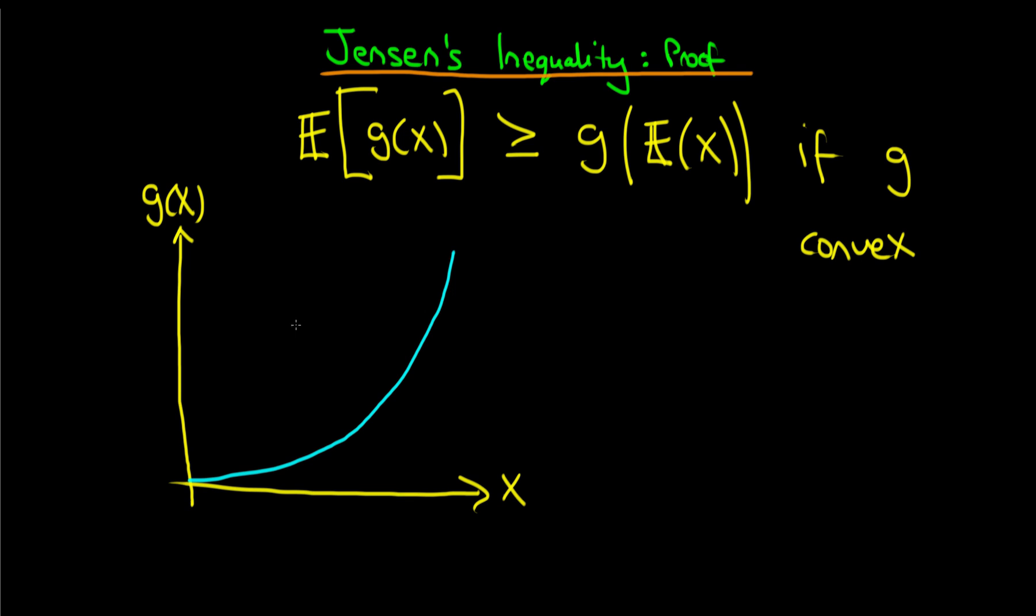What we then do as part of this proof is we mark a certain point on the x-axis which corresponds to the value of the expected value of some point x. And then we draw a line up to our curve and from there across to our y-axis.